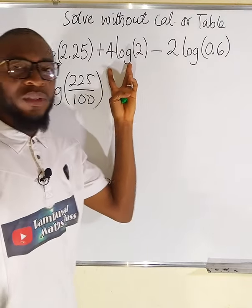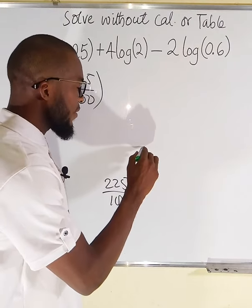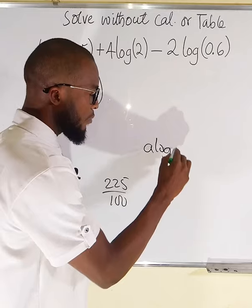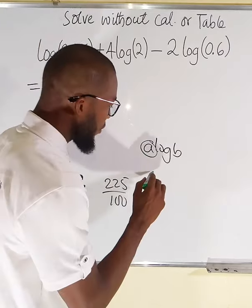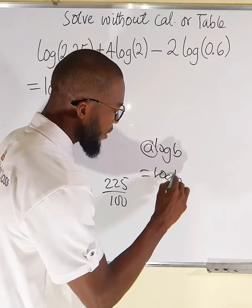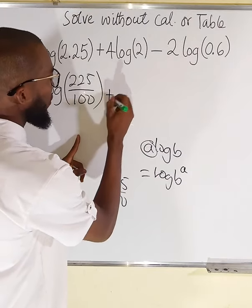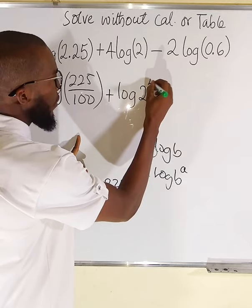Next let us move on to the second term here. Remember we have a law of logarithm that says if you have something like a log b, this a right here can always serve as the power of b. So instead of this we can write it as log of b power a. So we can write this as log of 2 power 4.